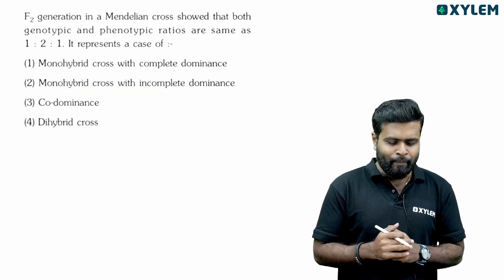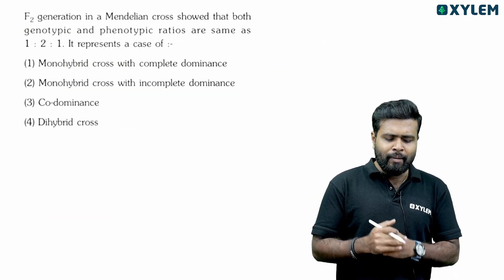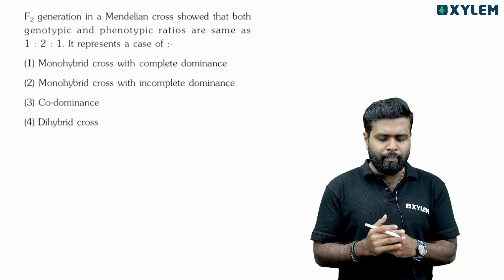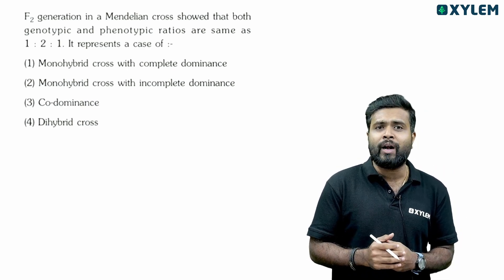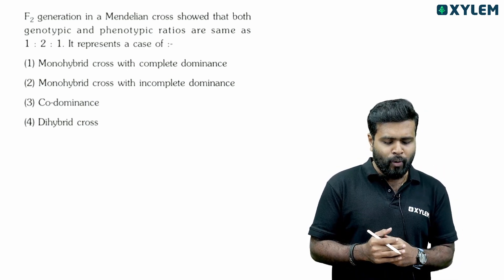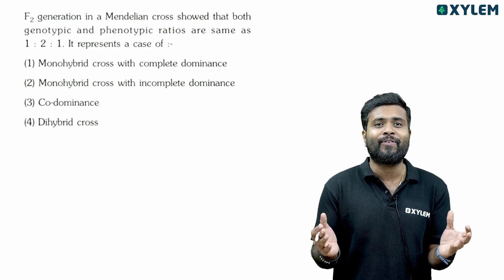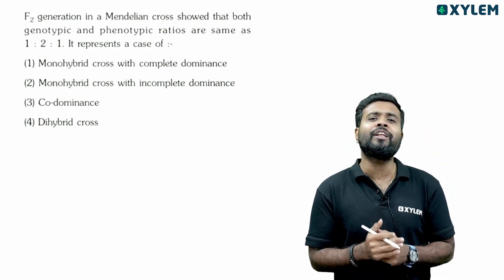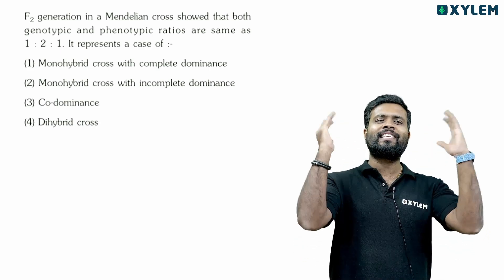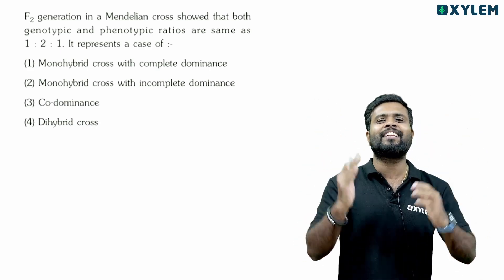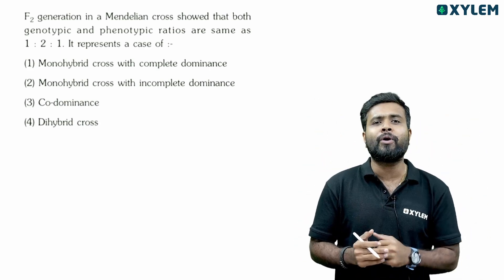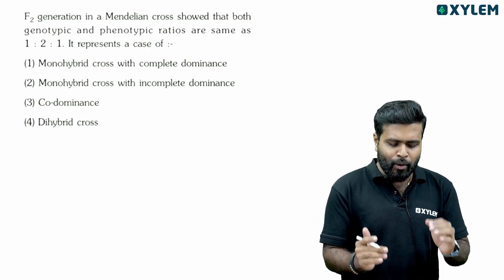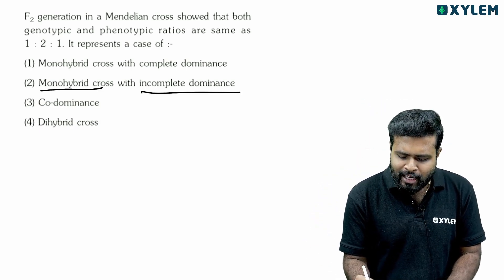Next question: F2 generation in a Mendelian cross showed that both the genotypic and phenotypic ratios are the same, 1:2:1. The genotypic ratio equals the phenotypic ratio at 1:2:1, which represents incomplete dominance in a monohybrid cross. Option 2 is the right answer.